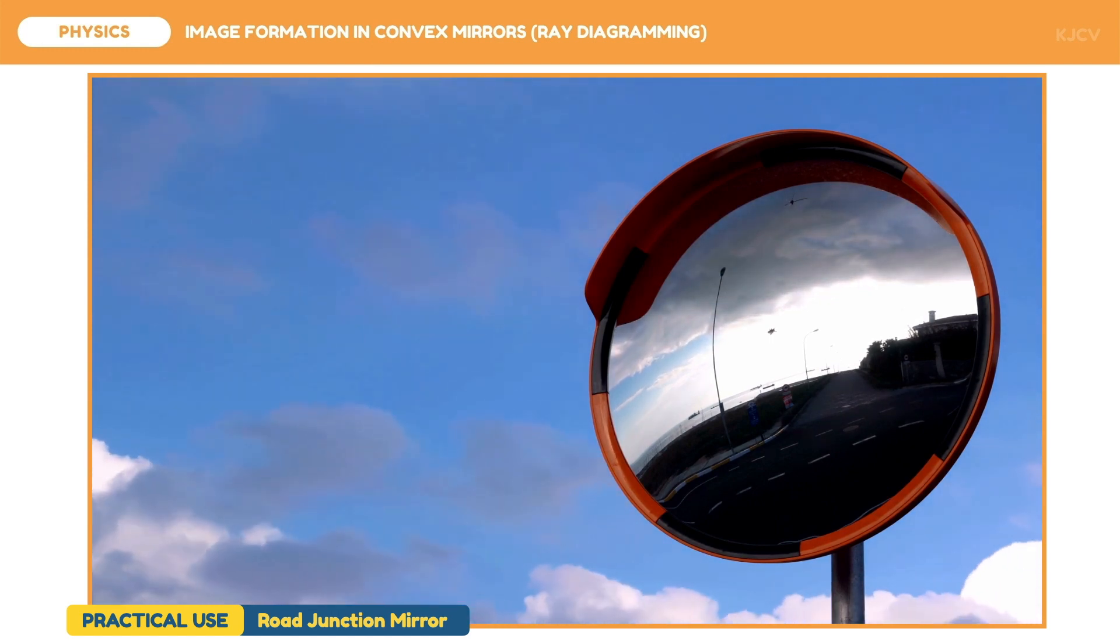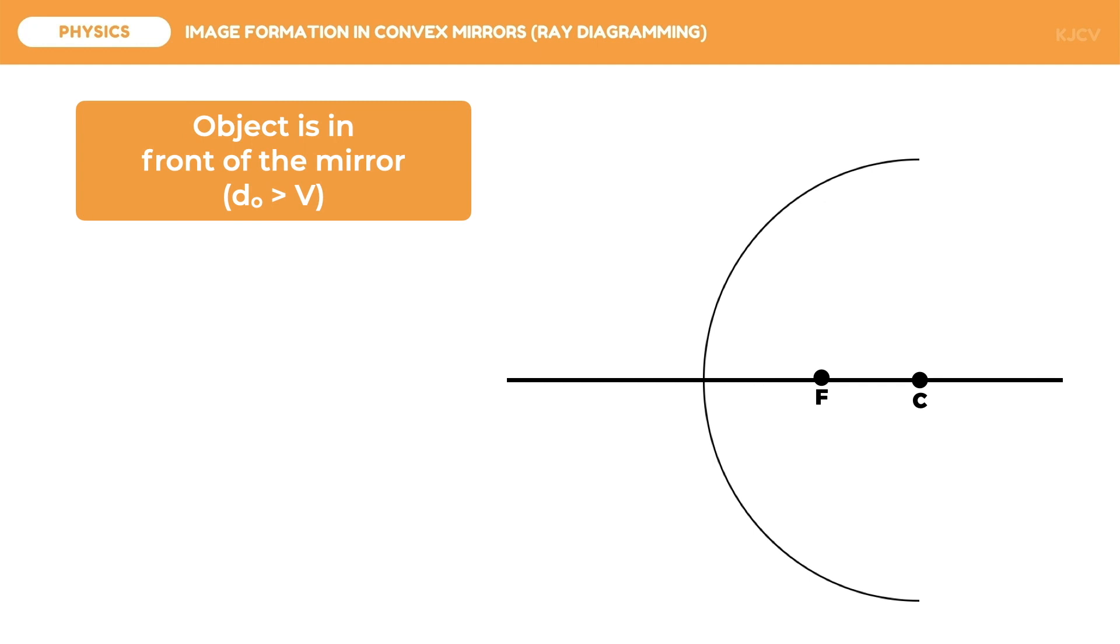But how are images formed in convex mirrors? Objects in front of convex mirrors are always greater than the vertex. There are three rays to be used in ray diagramming convex mirrors, but we only need two. Each ray is divided into two. The incident rays are drawn in solid lines and the reflected rays are drawn using broken lines.